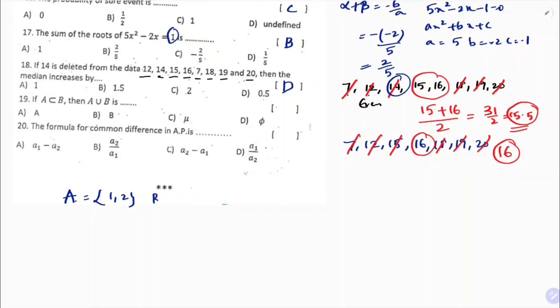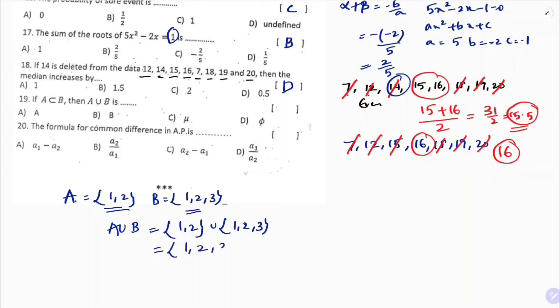Question 19: if A is a subset of B, find A union B. Taking an example: A = {1, 2}, B = {1, 2, 3}. A union B = {1, 2, 3} = B. So A union B = B, and the correct option is B. Question 20: the formula for common difference in an AP is the second term minus the first term. The correct option is C.